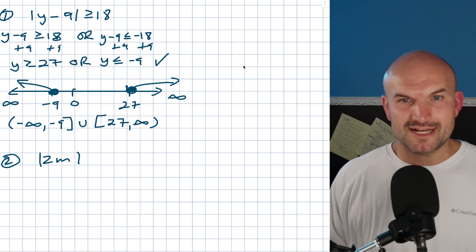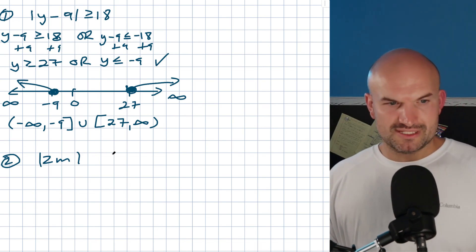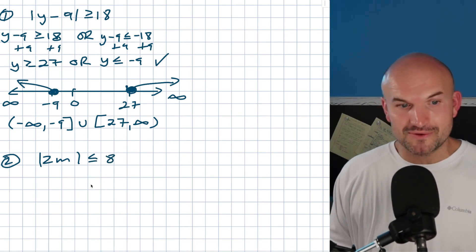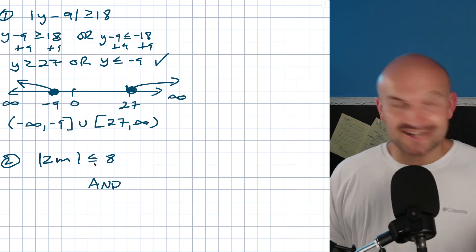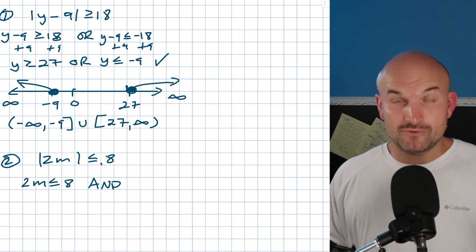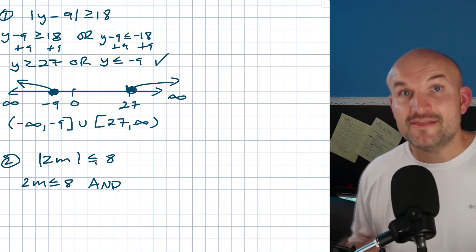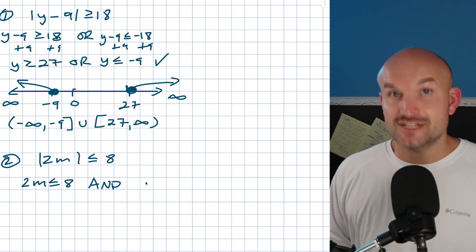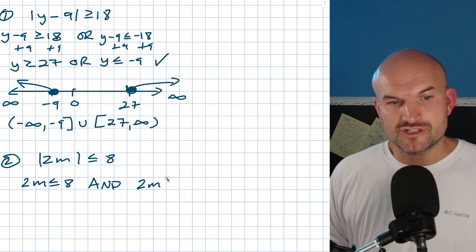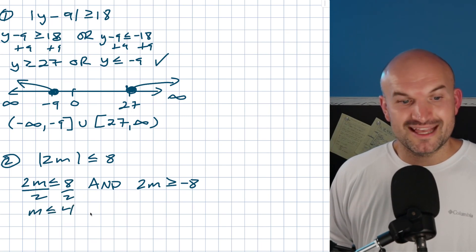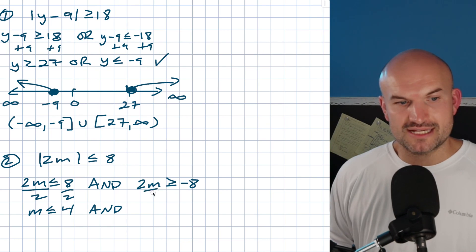Next example: the absolute value of 2m is less than or equal to 8. Whenever you see less than or equal to, write 'and.' So: 2m is less than or equal to 8, and 2m is greater than or equal to negative 8 — remember to flip the inequality on the negated side. Dividing by two on both sides: m is less than or equal to 4, and m is greater than or equal to negative 4.